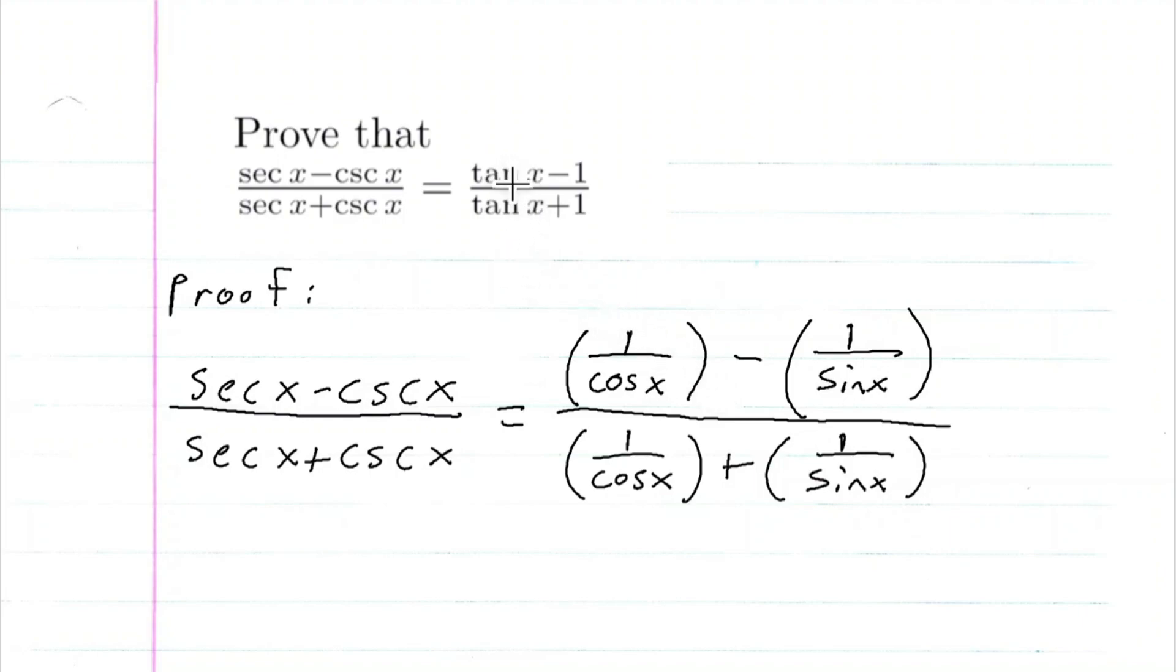I know that tangent is the same thing as sine over cosine. So if I were to multiply this whole numerator by sine of x, and this whole denominator by sine of x,